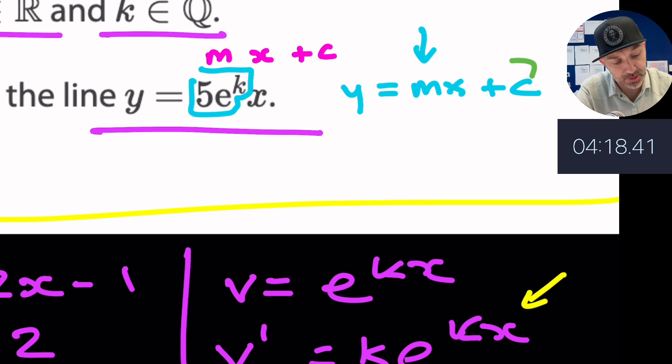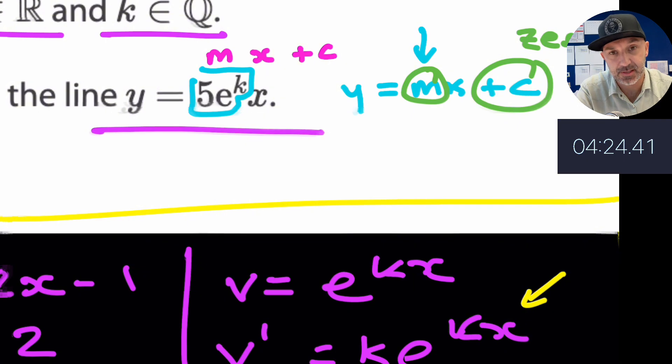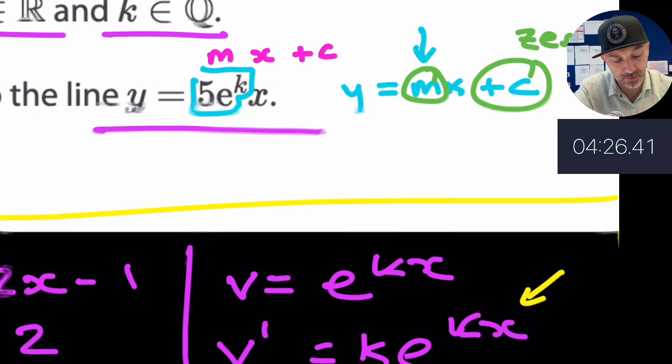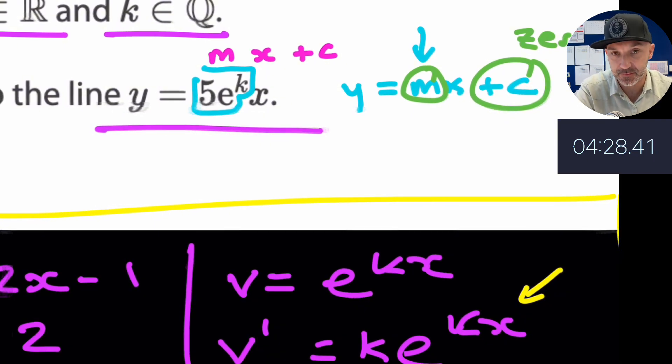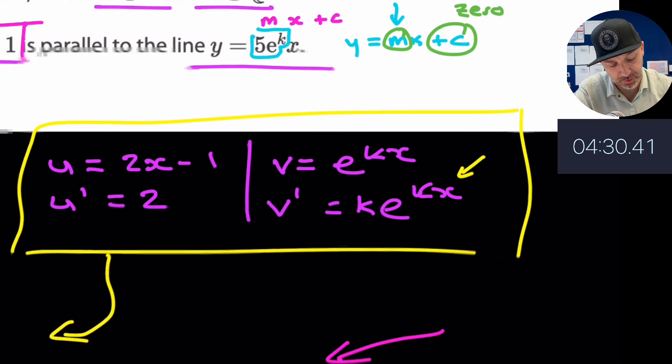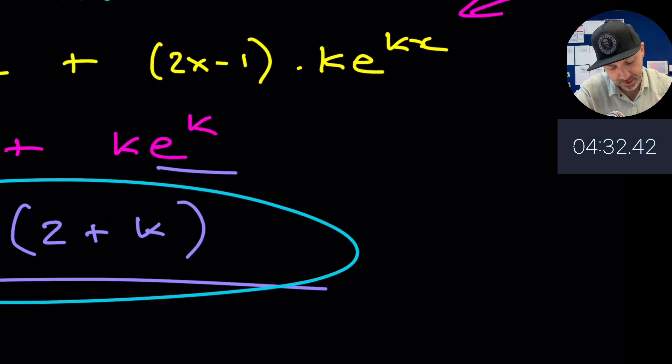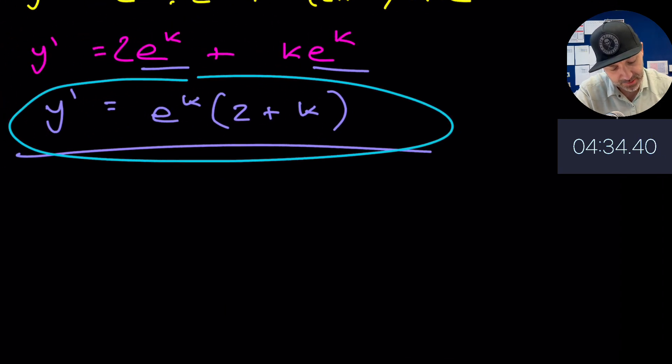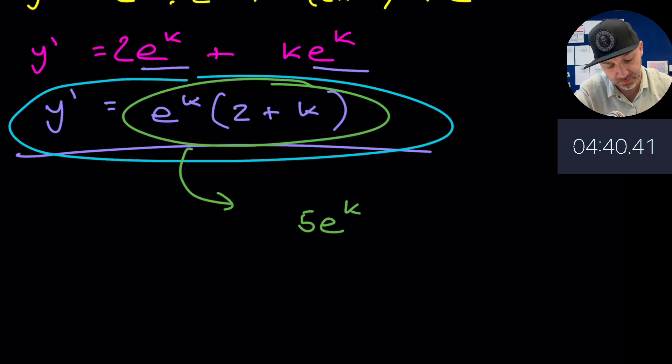So therefore this m is 5e to the k. The gradient of this line is 5e to the k. I do think that that's a little bit tricky to get your head around. But if we go back down here then, if the gradient on that top part was 5e to the k and we're comparing that with what we think the gradient is, let's just move that to the right.